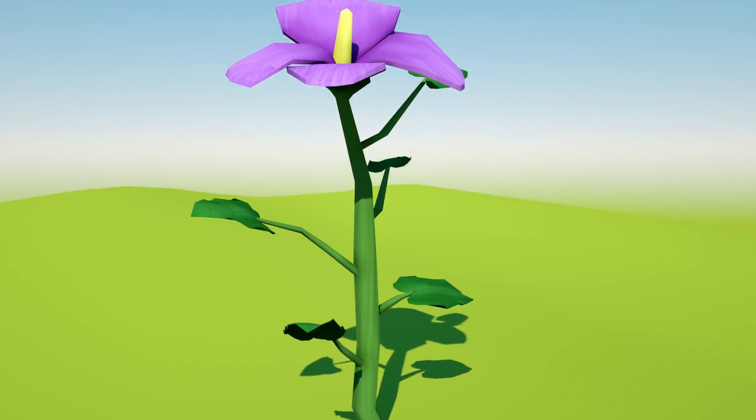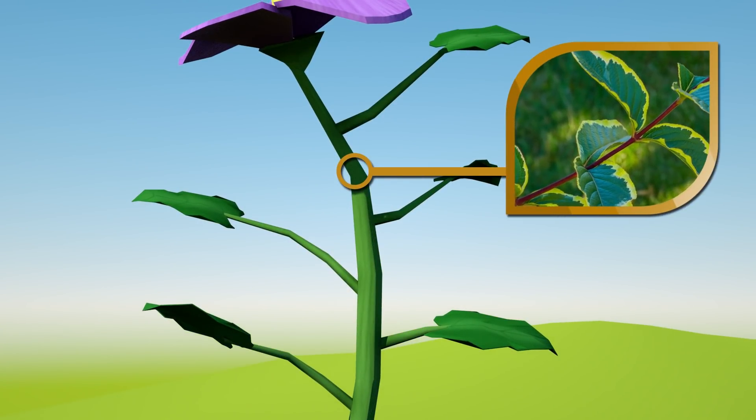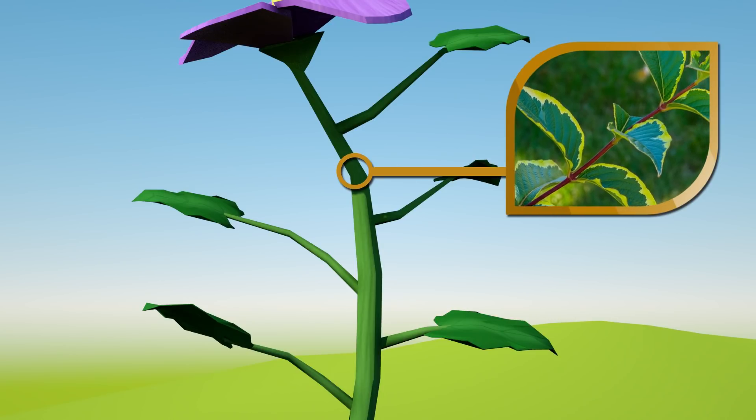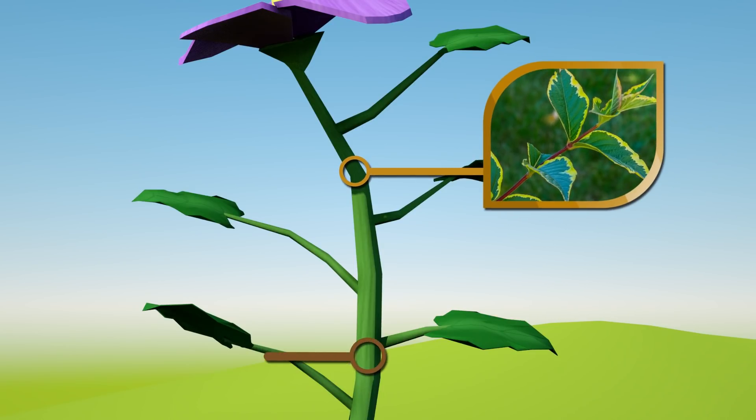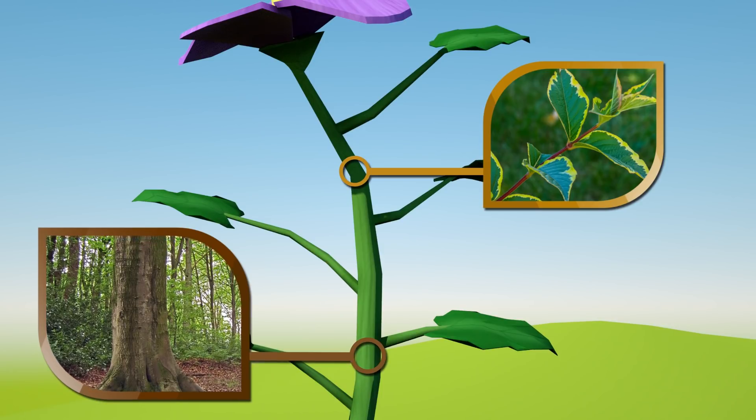Plant stems can grow into branches. Green stems are soft and flexible. Woody stems are hard and rigid. They are called trunks. Trees have trunks.